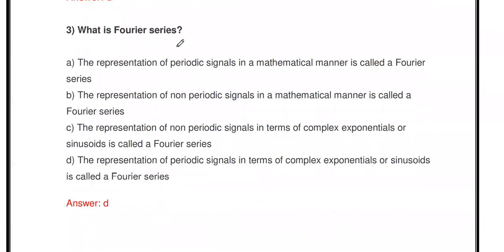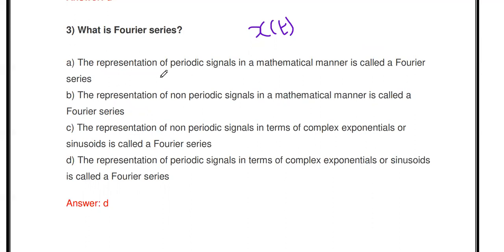Next question: What is Fourier Series? Fourier Series means that any periodic signal can be represented as a sum of sinusoidal and cosine terms, or as complex exponentials. The representation of a periodic signal in a mathematical manner is Fourier Series.